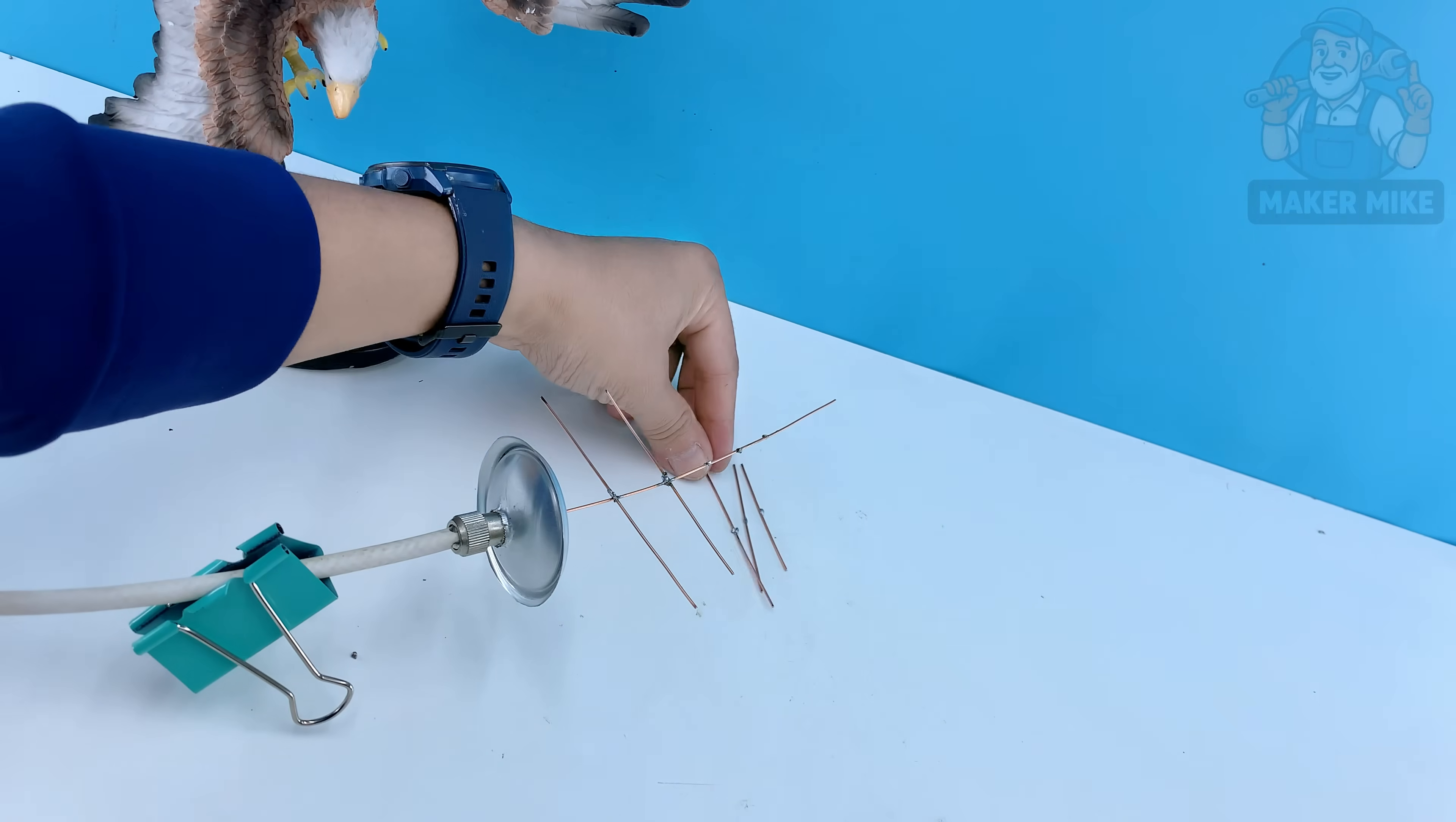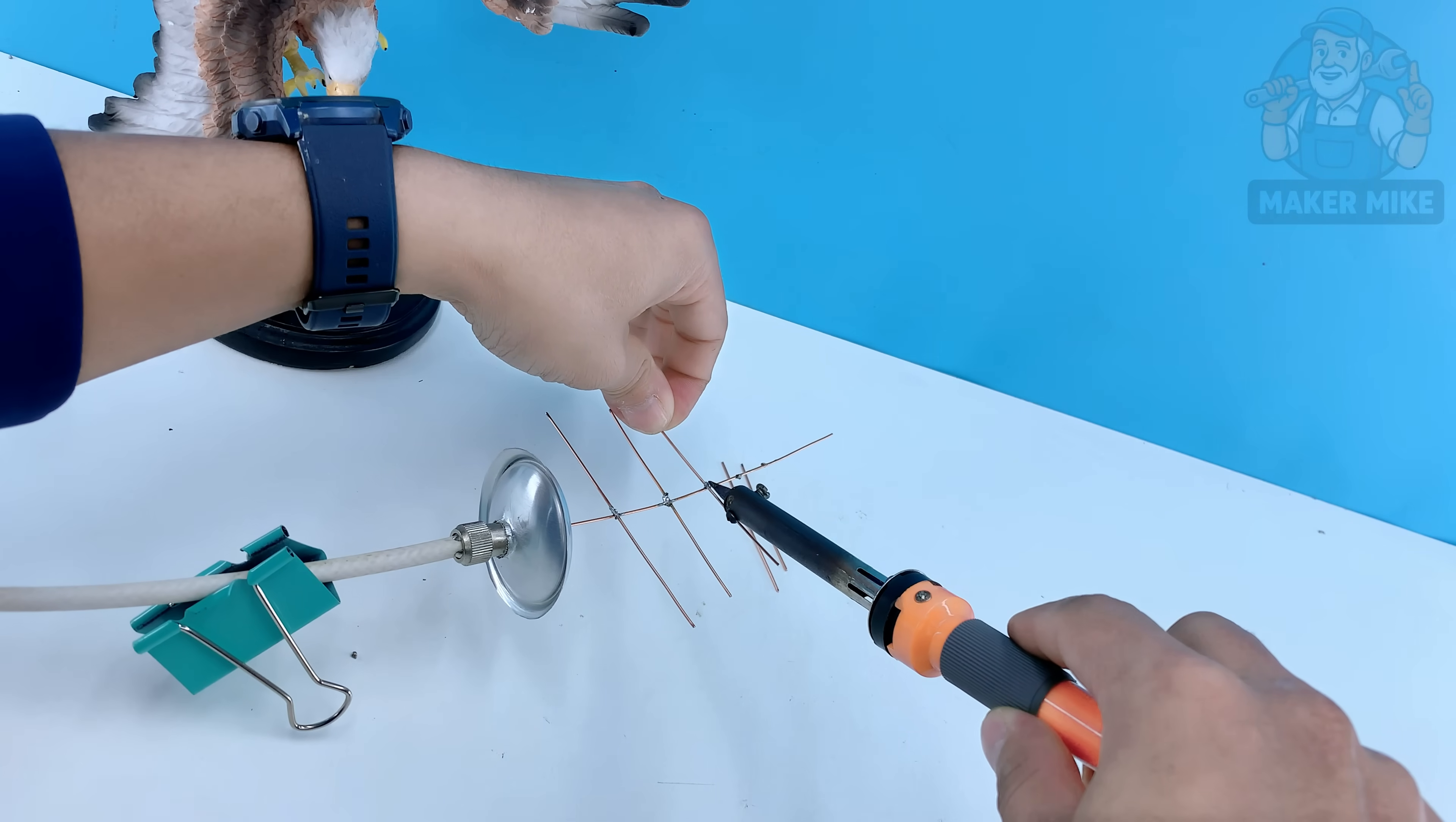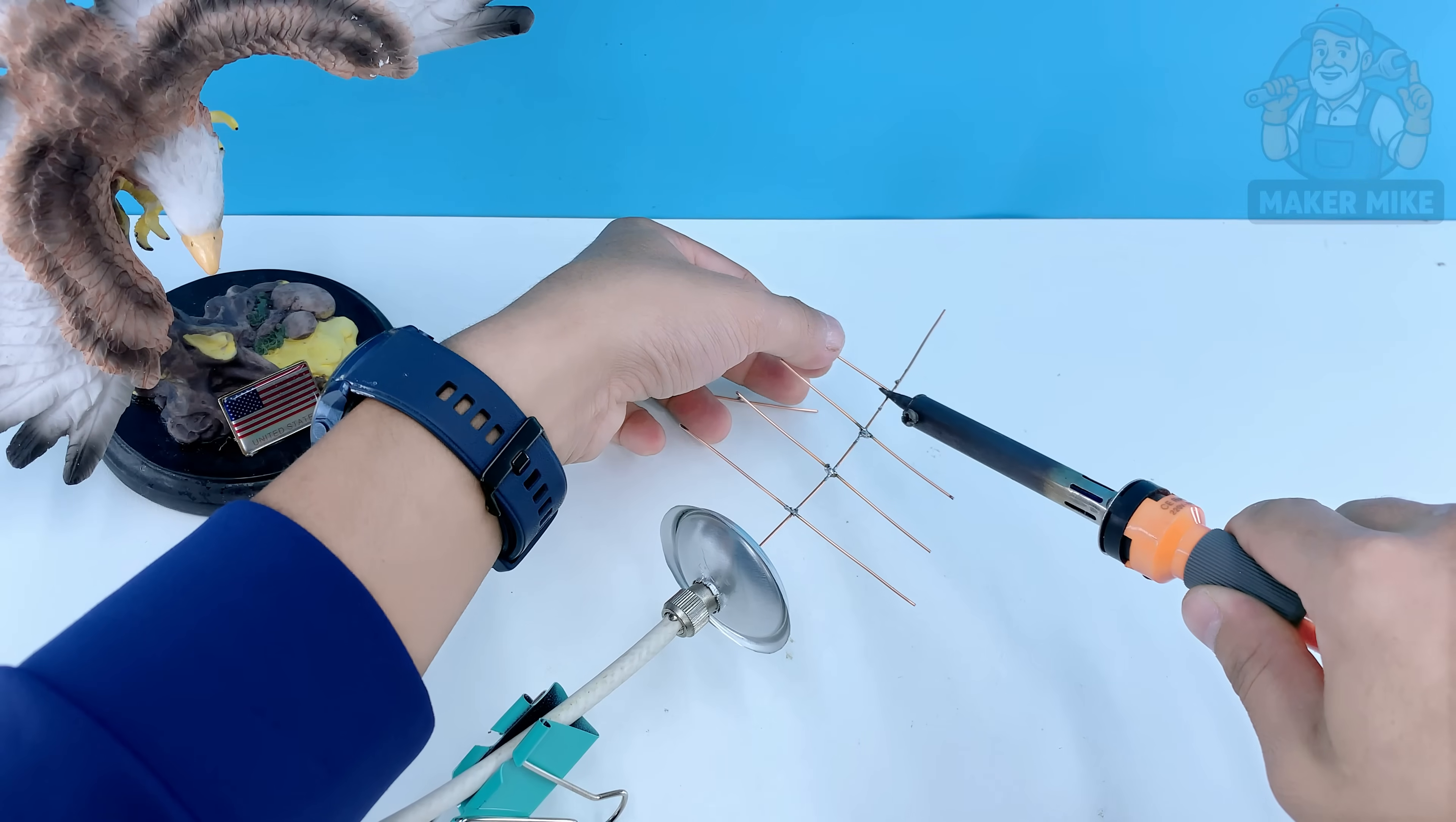Add a small bit of solder, not too much, just enough to make a clean, shiny bond. You'll know it's good when the solder flows smoothly and the wire doesn't wiggle once it cools.